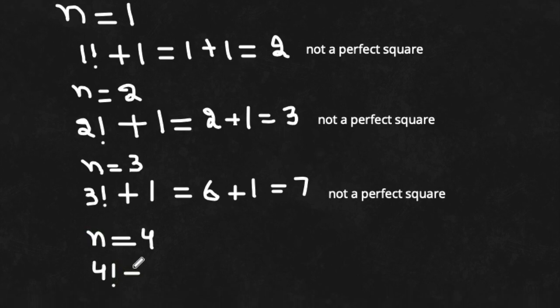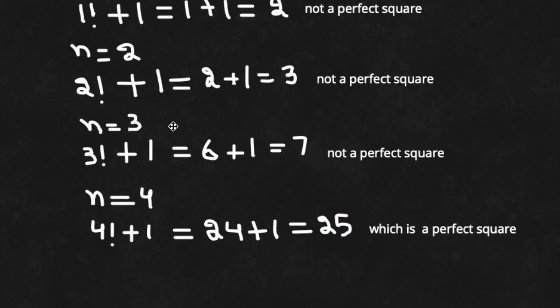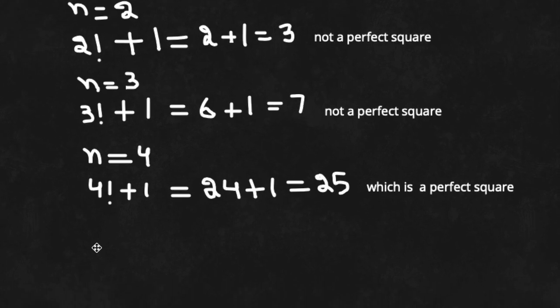Consider the next value n is equal to 4. Now we have 4 factorial plus 1. 4 factorial is basically 24, and 24 plus 1, we get 25. 25 is a perfect square — it is a square of 5.